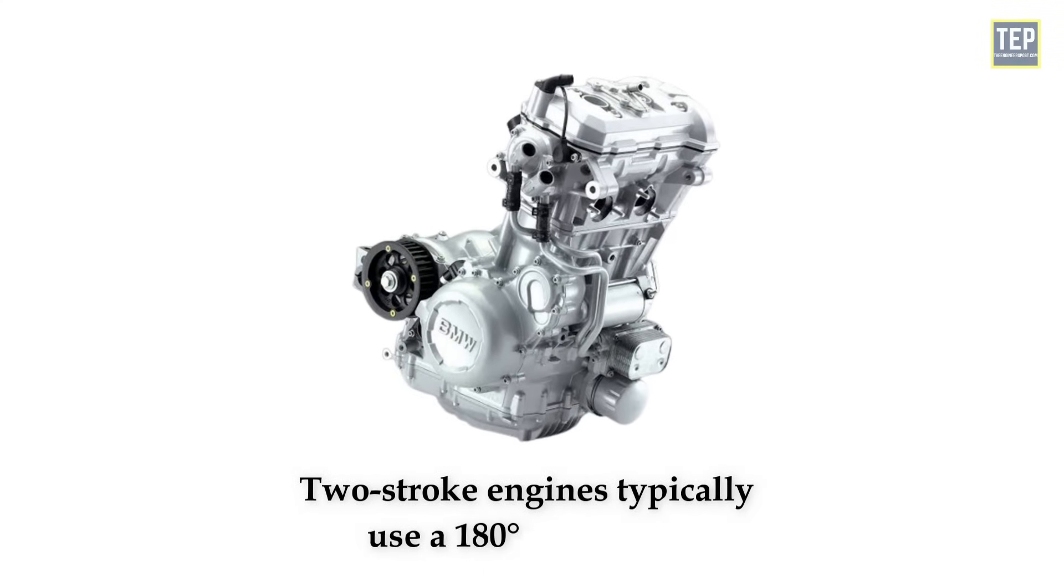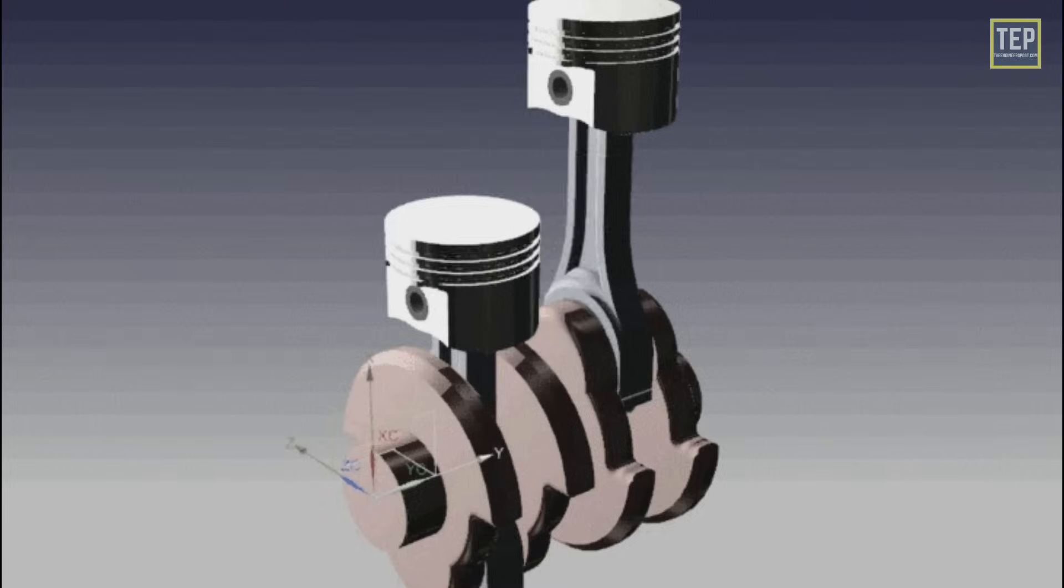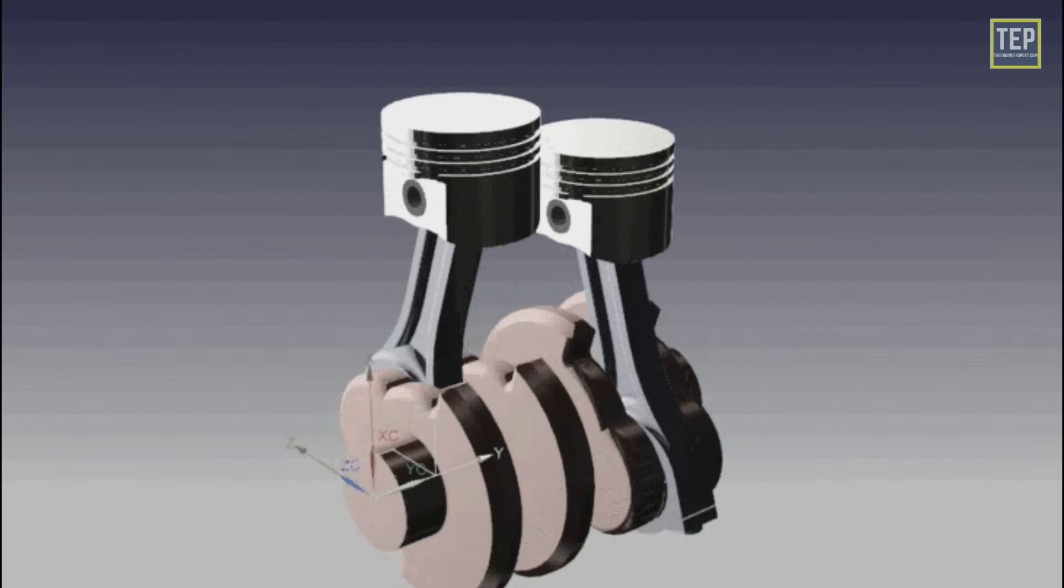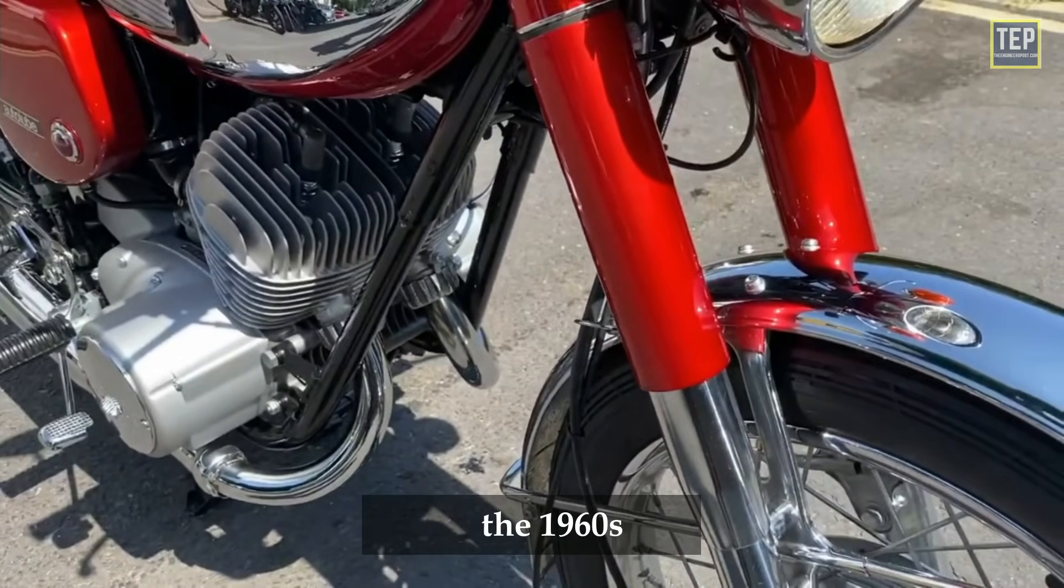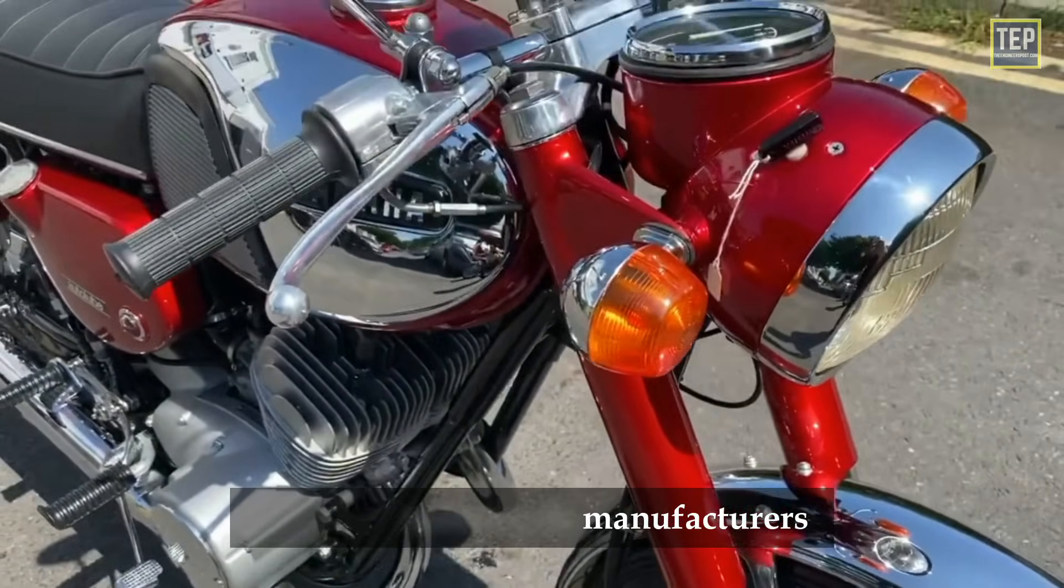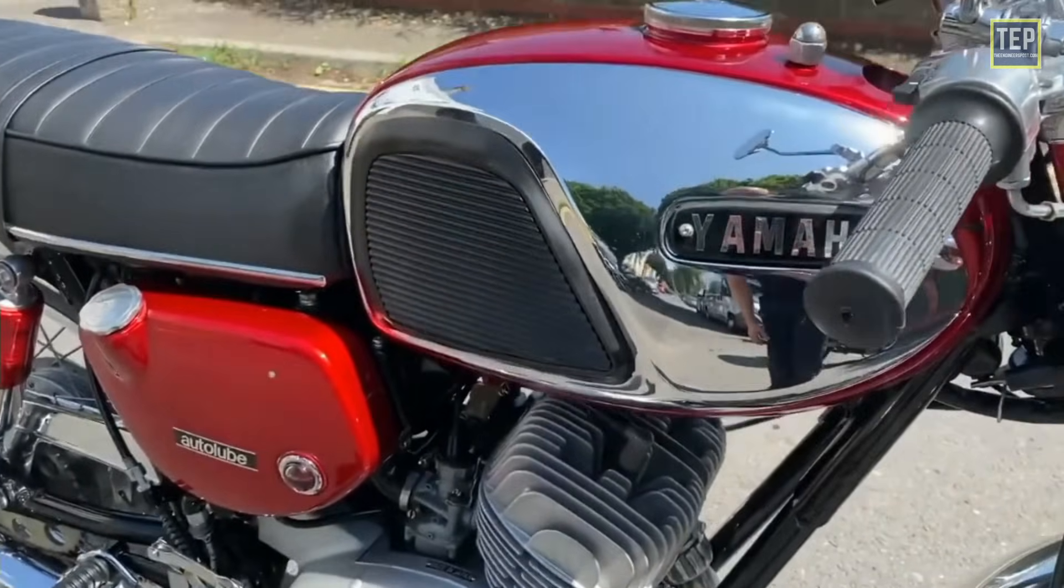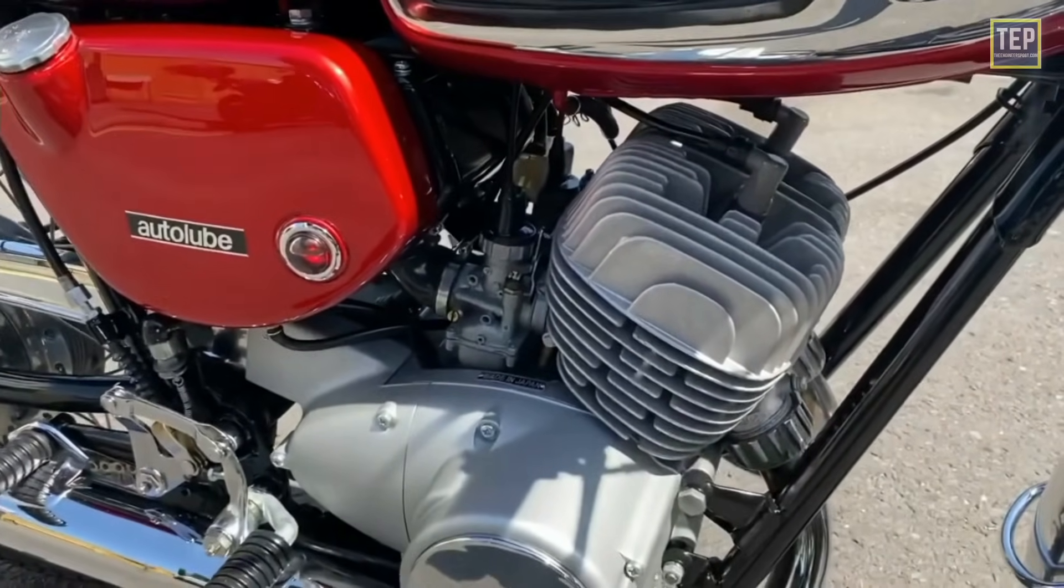Two-stroke engines typically use a 180-degree crankshaft, since this results in two evenly spaced power strokes per revolution. In the 1960s, Japanese motorcycle manufacturers favored using 180-degree crankshafts, since the increased smoothness allowed higher RPM and higher power outputs.